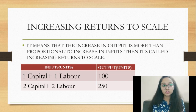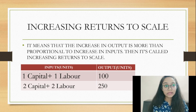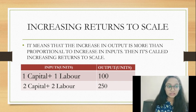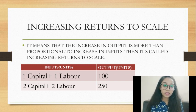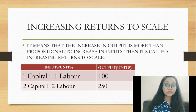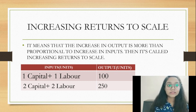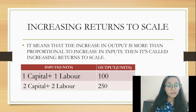Increasing returns to scale means our output increases in a greater proportion than the increase in inputs. We are talking about proportionate increase — when inputs increase by a certain percentage, the output increases by a larger percentage. For example, a 100% change in input leads to more than 100% increase in output.